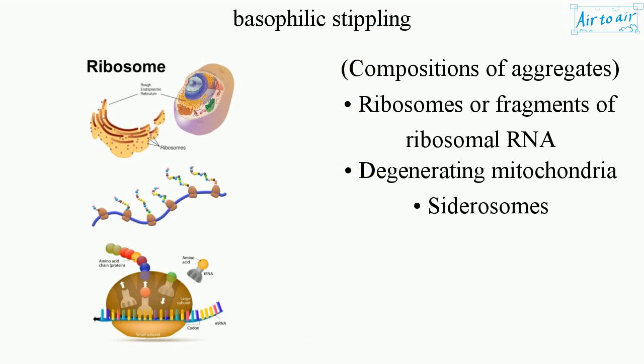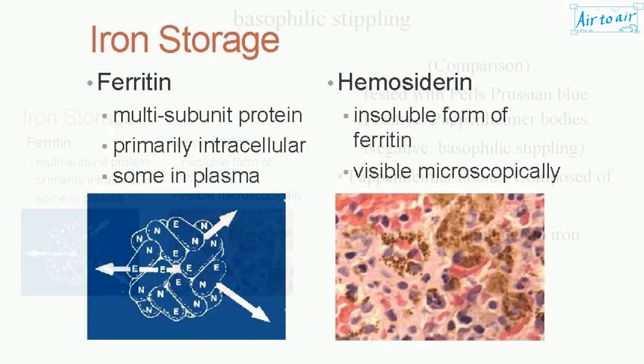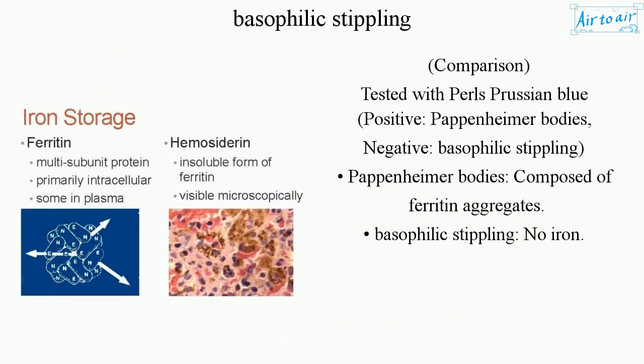The granules are composed of aggregates of ribosomes or fragments of ribosomal RNA, degenerating mitochondria, and siderosomes. In comparison, Pappenheimer bodies are Prussian blue (Perls) positive, while basophilic stippling is Pappenheimer body negative — as Pappenheimer bodies are composed of ferritin aggregates, whereas basophilic stippling contains no iron.